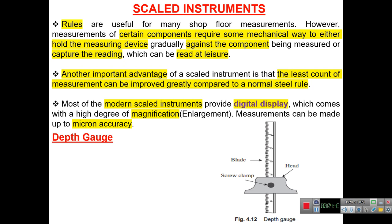As seen in the diagram, the depth gauge consists of a head — T-shaped or inverted-T — a blade (or sometimes a rod), and a clamping screw.